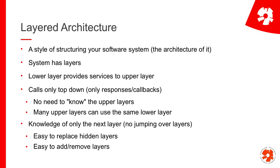The idea is that lower layers provide some kind of service or functionality to the upper layer. Calls go top-down — a lower layer provides something that has been called from the top, and it only responds. It does not call back or call a function in the upper layer. This means the lower layer doesn't have to know what's on top of it, and many upper layers can use the same lower layer because it doesn't need to know who's using it.